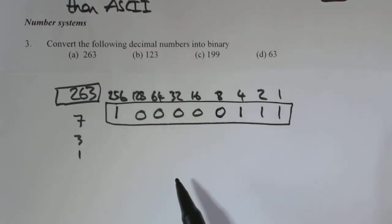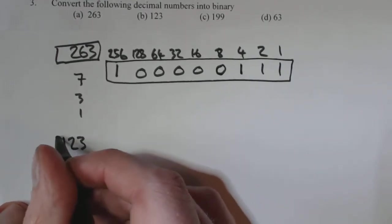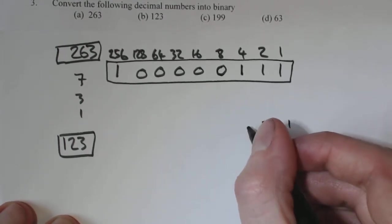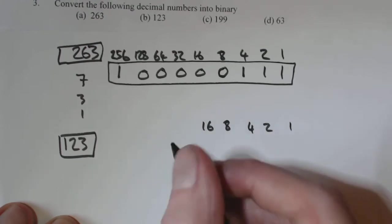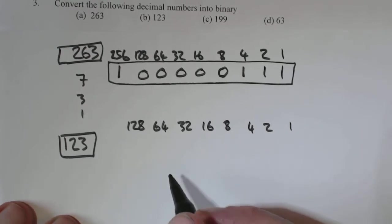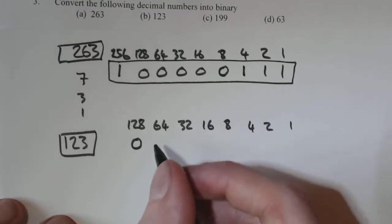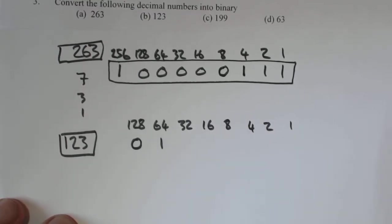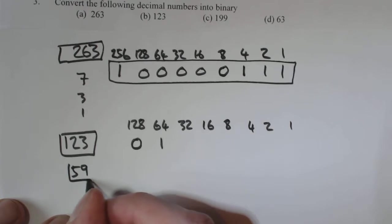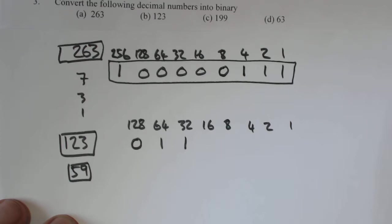Now, if you look at 123. Again, this is the more conventional way because it's just going to be using 8 bits. 64, 128. So 128 doesn't go into 123. But 64 does. So 123 minus 64, we are left with 59. Now 32 goes into 59. 59 minus 32, you're left with 27.